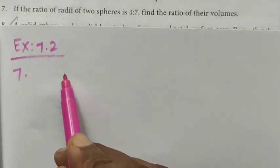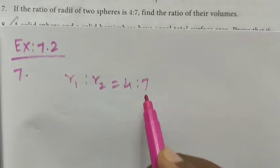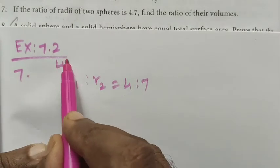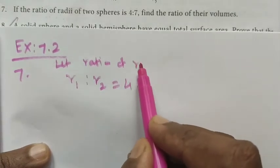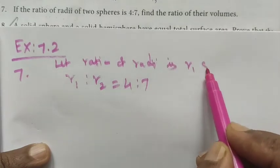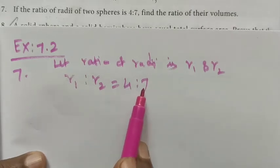it as two spheres. The ratio r1 is to r2 equals 4 is to 7. Let me write the ratio of radii as r1 and r2, that is r1 is to r2 equals 4 is to 7, as given.